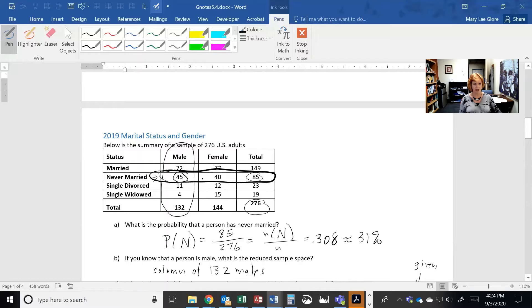Of those, how many are male? 45. So now, the probability of being male given I'm never married is going to be the 45 divided by the total of never married, which is 85.